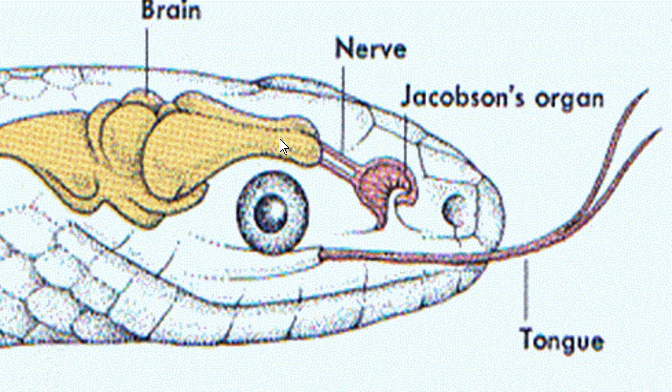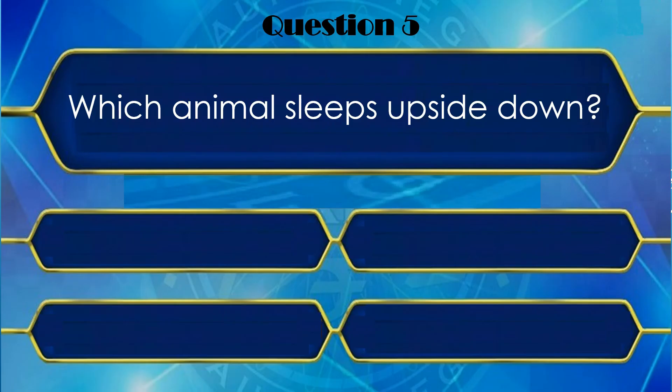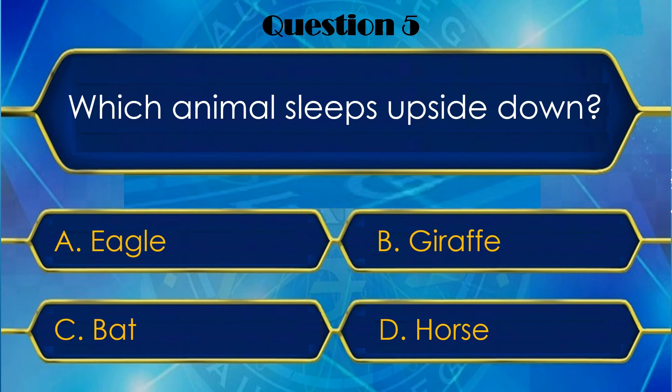Now let us move to your next question. And your fifth question is: Which animal sleeps upside down? Aisa kaun sa animal hai jo ulta hokar sota hai? And your options are: A. Eagle, B. Giraffe, C. Bat, or D. Horse.